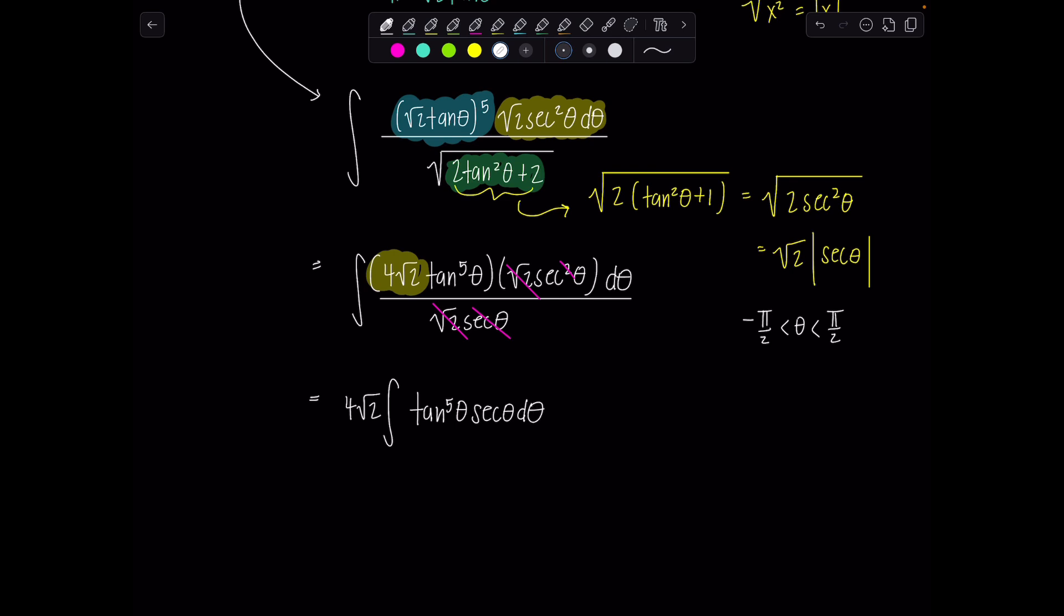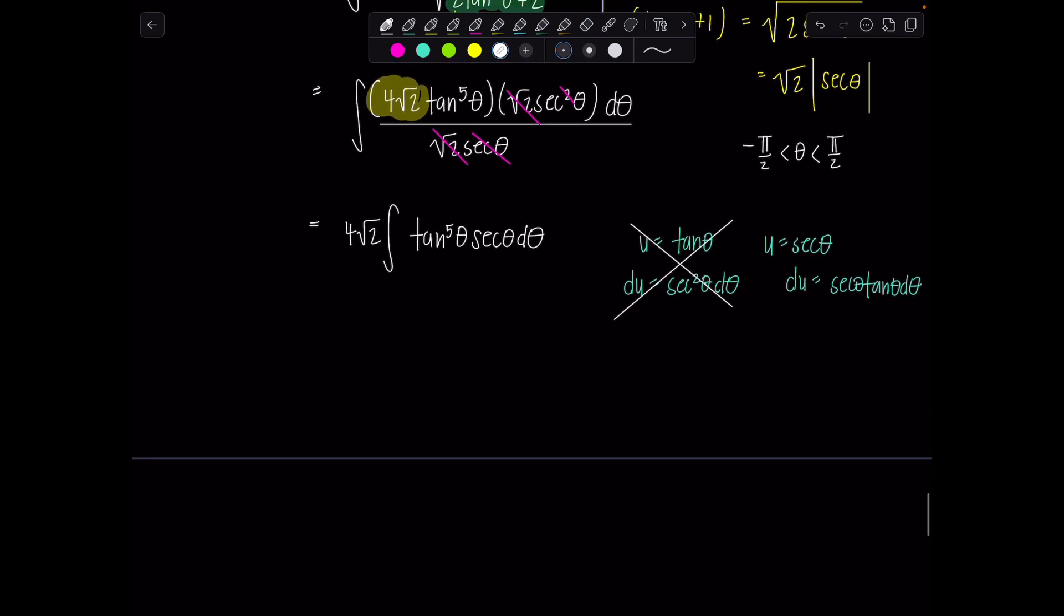So from here to proceed, we're going to have to do a u sub, and I just mentally go through the two options that I have. Would it work to let u be tan theta, or would it work to let u be secant theta? Well, if u is tan theta, du would be secant squared theta d theta. Do I have that? No. However, if u is secant theta, du would be secant theta tan theta d theta. Do I have that? Kind of. I can steal a tangent over. So let's do that.